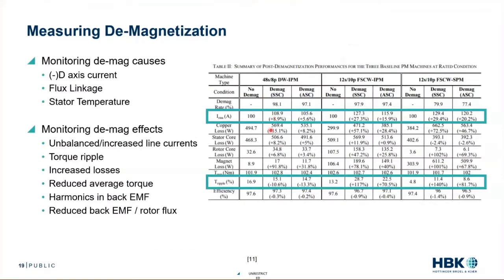I think this is a good chart and I highlighted some of the areas I think are particularly interesting. With demagnetization, we can monitor the causes. We know the causes are temperature and we know it's negative d-axis flux or d-axis currents. So we can monitor those two things — we can look at the flux linkage, we can look at the negative d-axis currents, and understand why these faults might be happening or what's leading up to these faults.